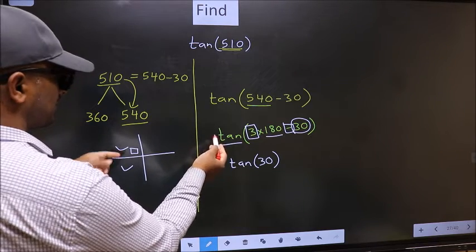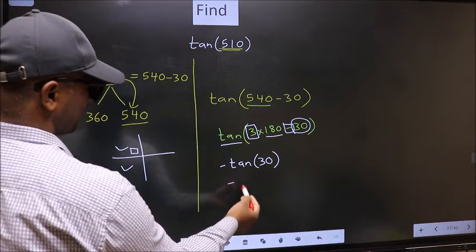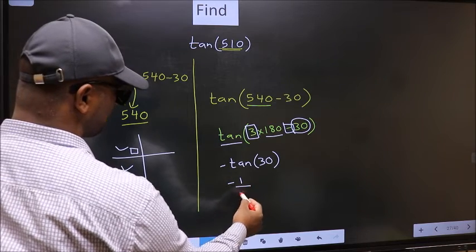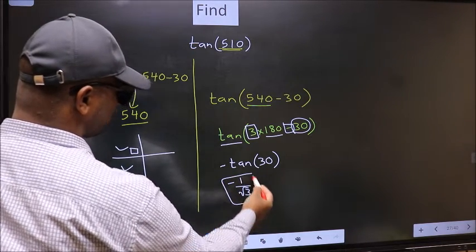And in the second quadrant, tan is negative. So we should put negative. So negative tan 30 is 1 by root 3. This is our answer.